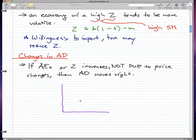Let's have this point be Y1, the horizontal line is our income, and the vertical is our price. Let's have this purple curve be our first aggregate demand curve. Let's say that AE or Z did increase, but not due to price changes.